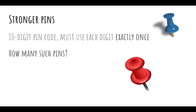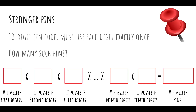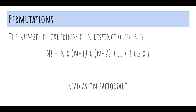Now let's talk about stronger PINs. Let's say you have a 10-digit PIN code and you must use each digit exactly once. How many such PINs are there? For the first digit, there are 10 choices. For the second digit, there are only 9, because you can't use the same digit as before. For the third digit, you can't use any of the first two, so there are only 8 choices, and so on. When you get down to the 10th digit, there's only one remaining. When you multiply this all together, you get about 3.6 million. This huge product from 10 down to 1 has a name: a permutation is the number of orderings of n distinct objects, read as n factorial, written as n with an exclamation mark, and it's the product of n × (n−1) × (n−2) all the way down to 1.